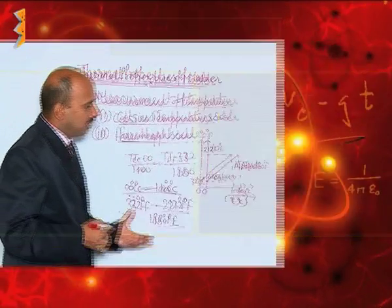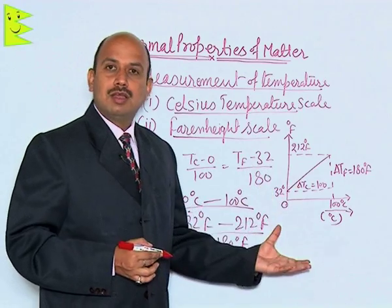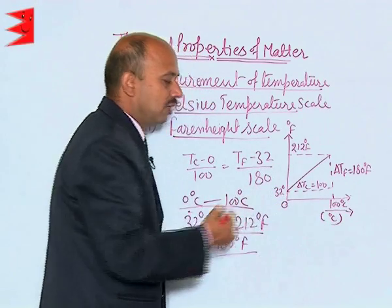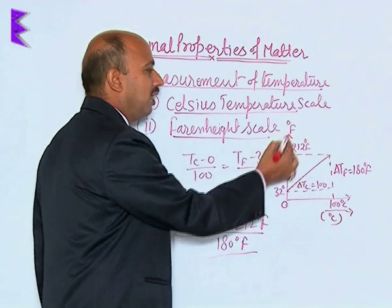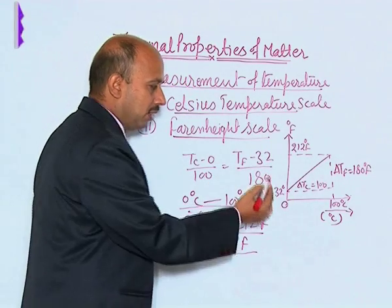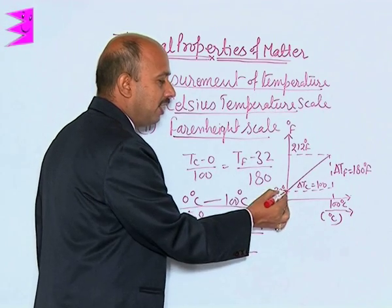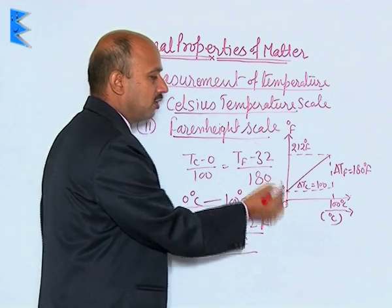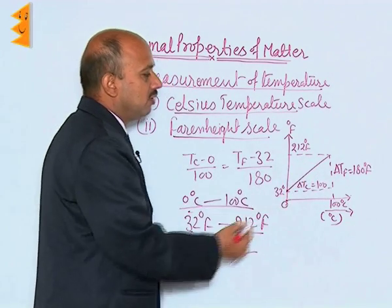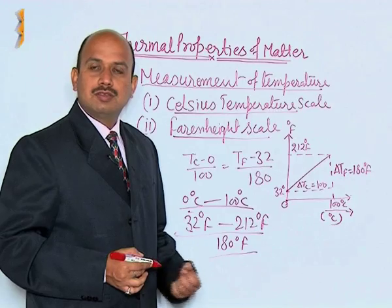We can also compare the Celsius scale and the Fahrenheit scale using a graph. On the x-axis is the Celsius scale and on the y-axis is the Fahrenheit scale. At 0 degrees Celsius, the Fahrenheit value is 32. This graphical study illustrates the relationship between the Celsius and Fahrenheit scales.